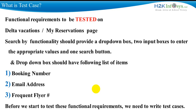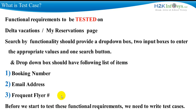These are the functional requirements to be tested on Delta Vacations' My Reservation page. The Search By functionality should provide a dropdown box, two input boxes to enter the appropriate values, and one search button. The dropdown box should have the following list of items: booking number, email address, and frequent flyer number. Before we start to test these functional requirements, we need to write the test cases.